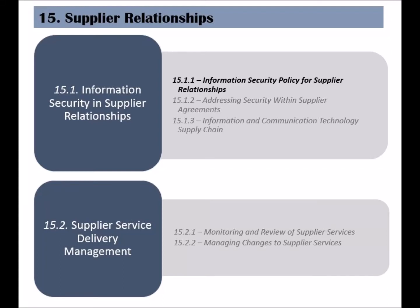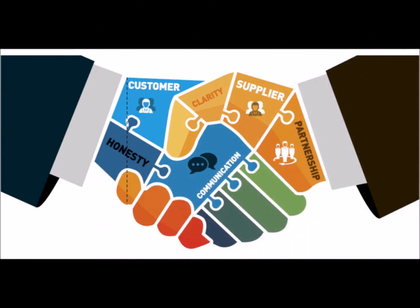The 11th clause of the ISO 27002 standard is called Supplier Relationships. It has two categories, and the first is called Information Security in Supplier Relationships. The objective of this category is to safeguard assets from suppliers' unauthorized access or unsupervised activities. This category has three controls.